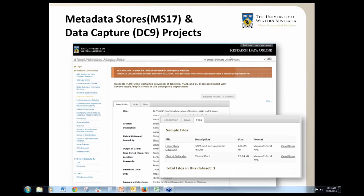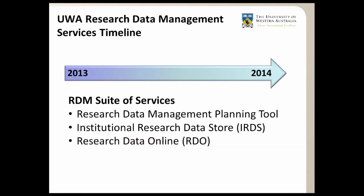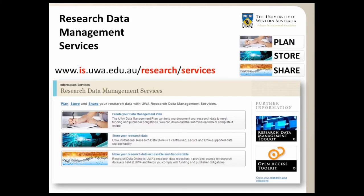These three ANDS projects helped catapult UWA into the research data management services area, and we then needed to promote these ANDS-funded services and tools we were developing for data storage initiatives. We developed a suite of research data management services online, aimed at helping researchers create a data management plan and understand basic research data management concepts, and brought all these systems together in a web page divided into three sections: planning, storing, and sharing.